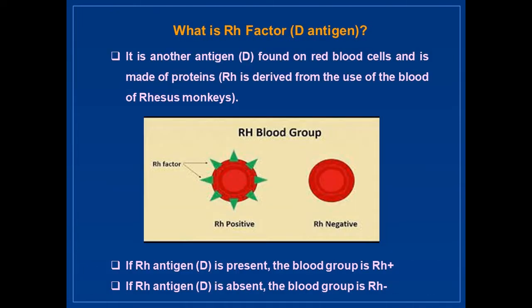What is Rh factor? It is another antigen, D, found on red blood cells and is made of proteins. If the Rh antigen is present, the blood group is Rh positive. If the Rh antigen is absent, the blood group is Rh negative.